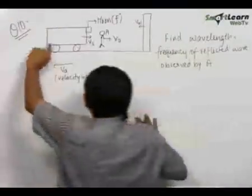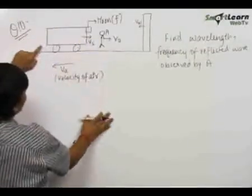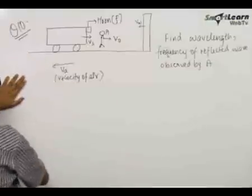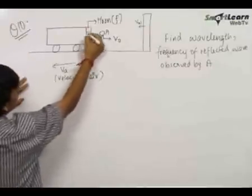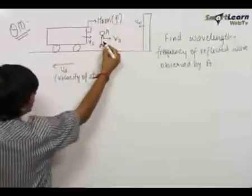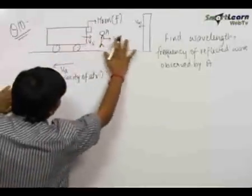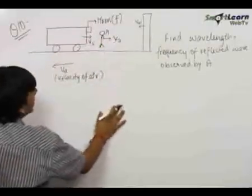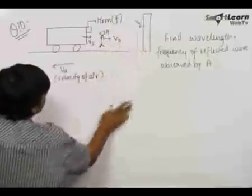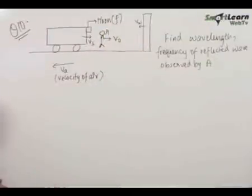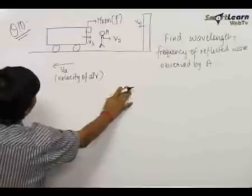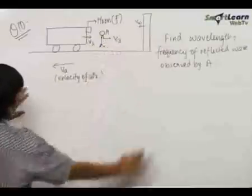We have been given a cart moving with a velocity Vs towards the right side. The velocity of the medium, that is air, is Va towards the left side. This cart has a horn blowing with a frequency f, and we have an observer in front of the car moving with a velocity V0 towards the right. There is a wall in front moving towards the left with a velocity Vw. We need to find the wavelength and frequency of the reflected wave as observed by observer A.